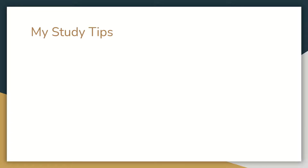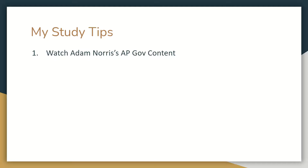My study tips for AP United States Government and Politics: number one, watch Adam Norris' AP Government content. It's very informative — he's got a playlist, make sure you watch all the videos. What I did is, pretty much the three weeks before the exam, I went through and watched that whole playlist about three or four times. If you do that, it really gets all of those important Supreme Court cases and important documents drilled and memorized in your head, so on exam day you can write about them and answer multiple choice questions.